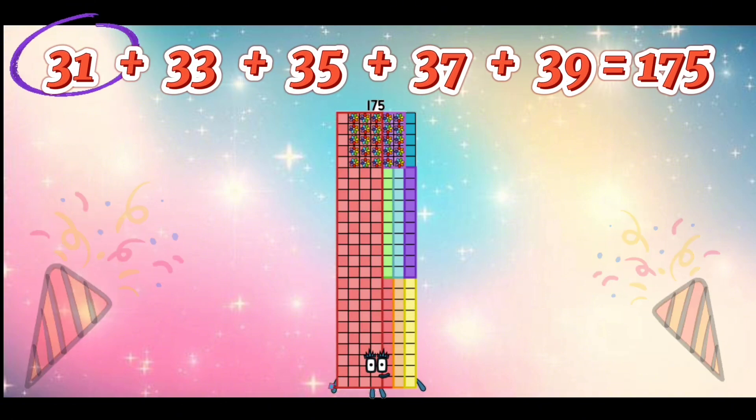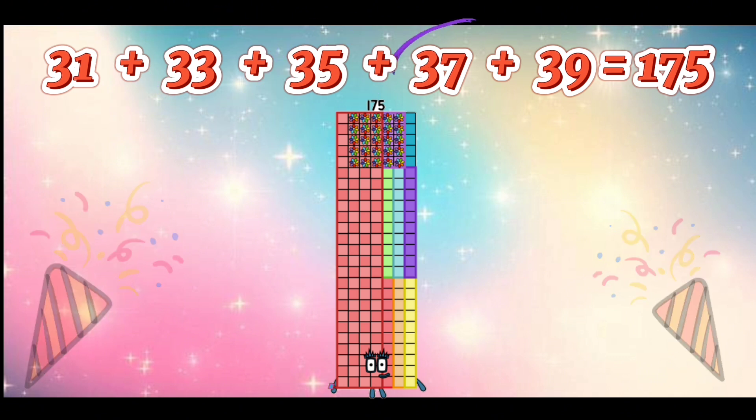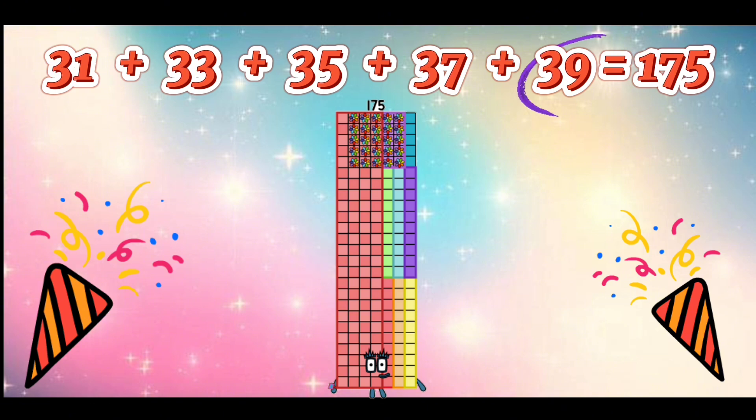Let's repeat. 31 plus 33 plus 35 plus 37 plus 39 is equal to 175.